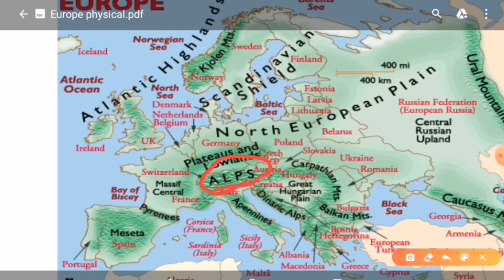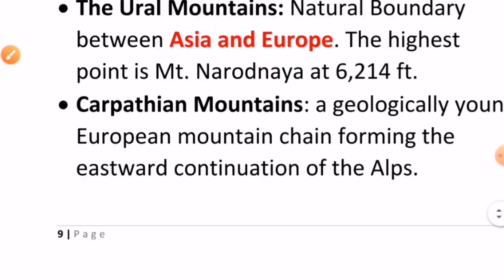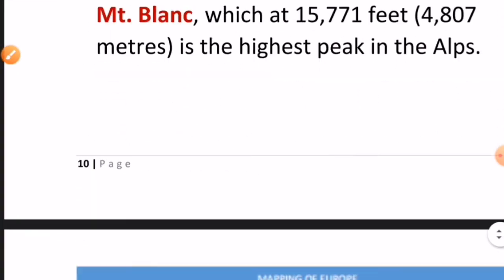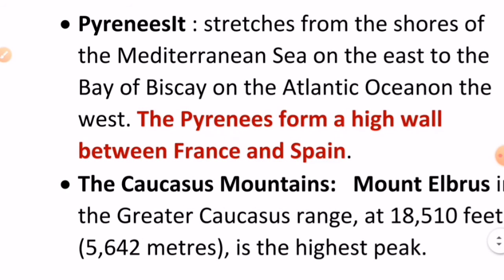The Alps stretch till the Himalayas of Asia. As we saw earlier, the Carpathian Mountains are the eastern arm of the Alps, so these ranges stretch to Asia and the Himalayas. The next important mountain range is the Pyrenees.